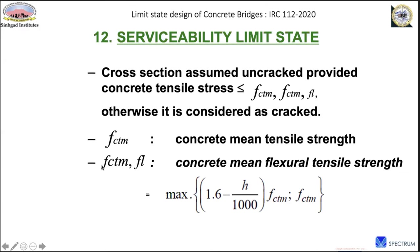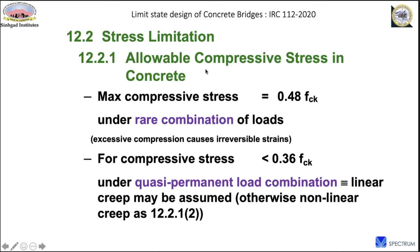The reason for limiting compressive stress to 0.48 fck under the rare combination is that beyond this level, the strength gains become almost irreversible and cracks are difficult to close. For quasi-permanent load combinations, if compressive stress exceeds 36% of fck, nonlinear creep must be considered; otherwise linear creep from Chapter 6 is acceptable. For tensile stress in steel under rare combination, the code restricts it to 80% of yield strength. To avoid a fatigue verification check, the stress in reinforcement should be limited to 300 MPa for frequent load combinations.